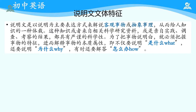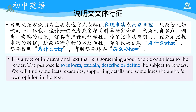为了把事情说明白，就必须把握事物的特征，进而解释事物的本质属性。不仅要说明是什么（what），还要说明为什么（why），有时还要解答怎么办（how）的问题。这里有一个英文版的解释：It is a type of informational text that tells something about a topic or an idea to the readers.